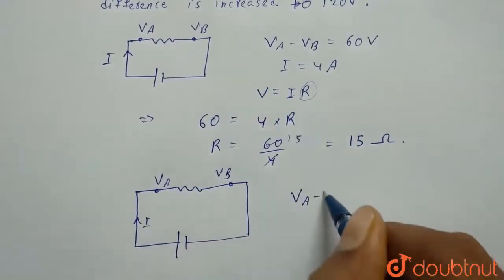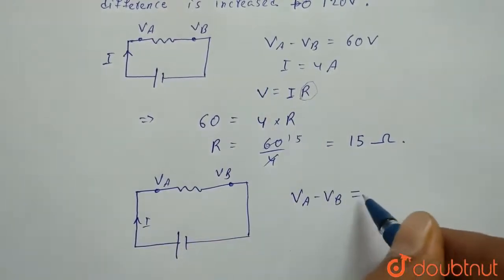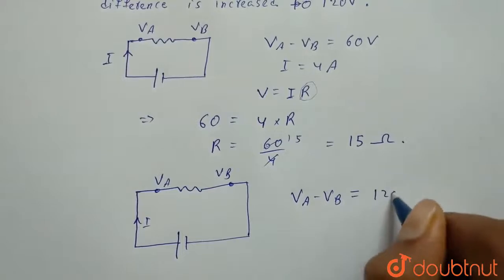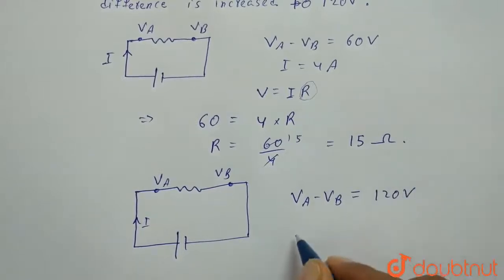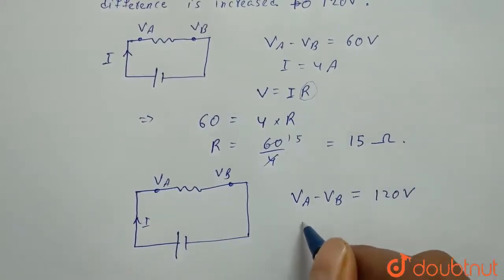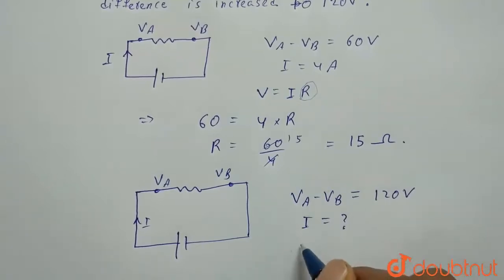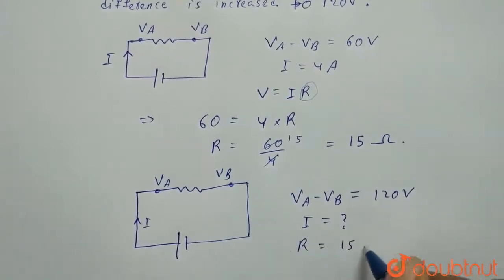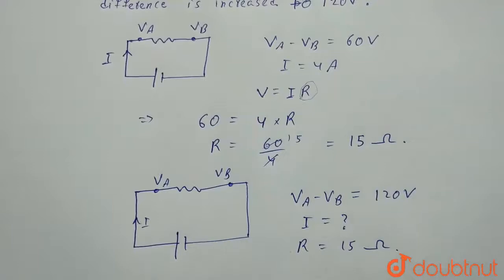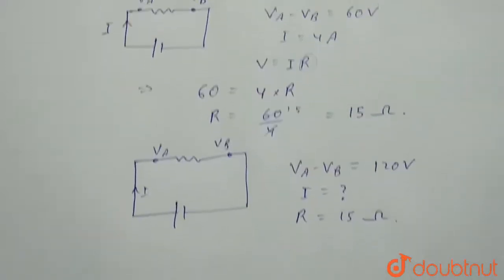we have VA minus VB which equals 120 volts and they asked about I, I equals what. But we have resistance known which is 15 ohms because heater is same, so resistance will be same for both cases.